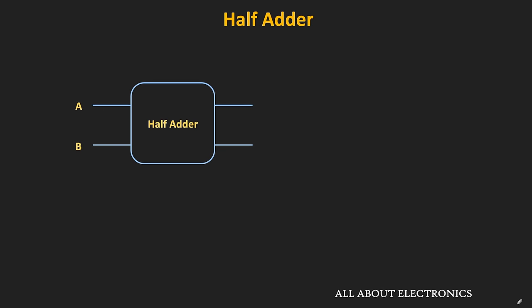The half adder is the combinational circuit which adds two bits and gives the sum and the carry bit as the output. Now let us see what is the logic circuit of this half adder.